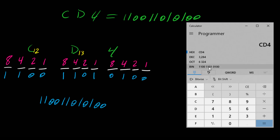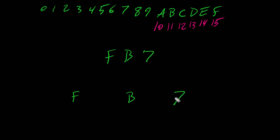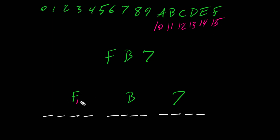Let's go over another example: FB7. First we separate them — F, B, and 7 — then place 4 bits for F, 4 bits for B, and 4 bits for 7. F in hexadecimal is equivalent to 15.